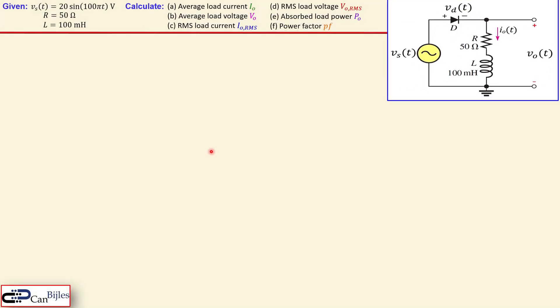Okay this is our circuit. We have again our AC voltage source V_S given by this expression. We have a resistor 50 ohms again and the inductor now in series of 100 millihenries. Again we like to calculate these values: the average load current, average load voltage, and RMS load current and RMS load voltage. So we would like to see that step by step for this circuit also.